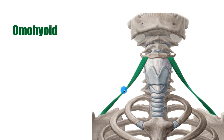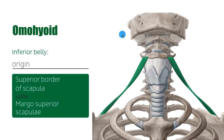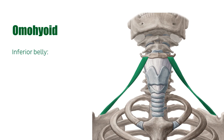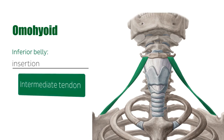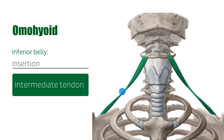This is where the two bellies of the omohyoid meet. The inferior belly originates from the superior border of the scapula, as clearly seen in this image. The inferior belly then ascends craniomedially and merges into the intermediate tendon at the height of the lateral cervical region, which is technically the insertion point for the inferior belly.